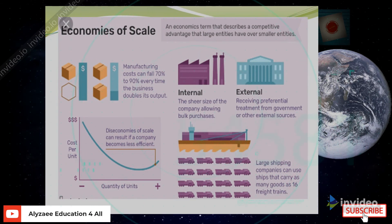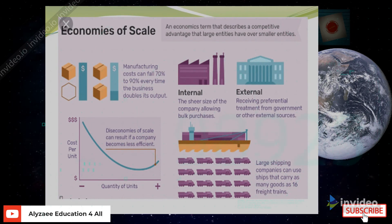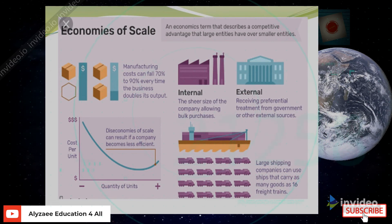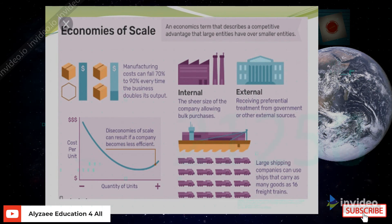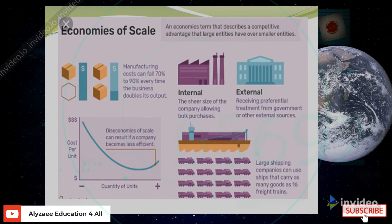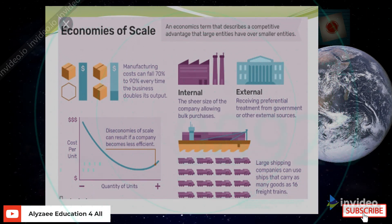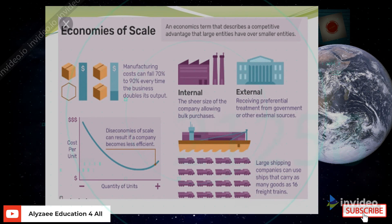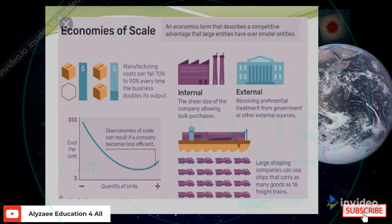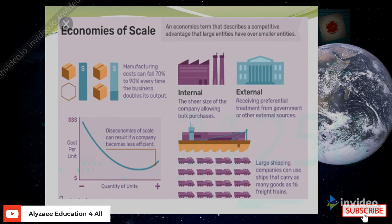In this slide, we will look at economies of scale. Economies of scale is an economics term that describes a competitive advantage that large entities have over small entities. Manufacturing costs can fall 70% to 90% every time a business doubles its output. Internal economies arise from the sheer size of the company, such as bulk purchases, while external economies come from preferential treatment from government or other external sources.